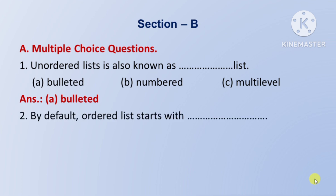Next question: by default, ordered list starts with — default rup se ordered list kisse start hoti hai. Option A: capital A. Option B: one. Option C: small a. Toh iska right answer hai Option B: one.